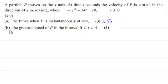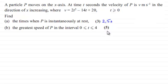In part B we're being asked to find the greatest speed of P in the interval where t is greater than or equal to naught but less than or equal to 4 seconds, and this is for five marks. If you'd like to have a go at this and haven't done so already, just pause the video and when you come back I'll run through the worked solution.